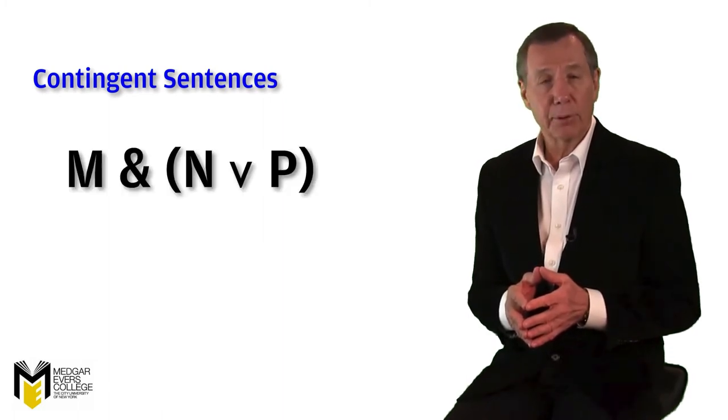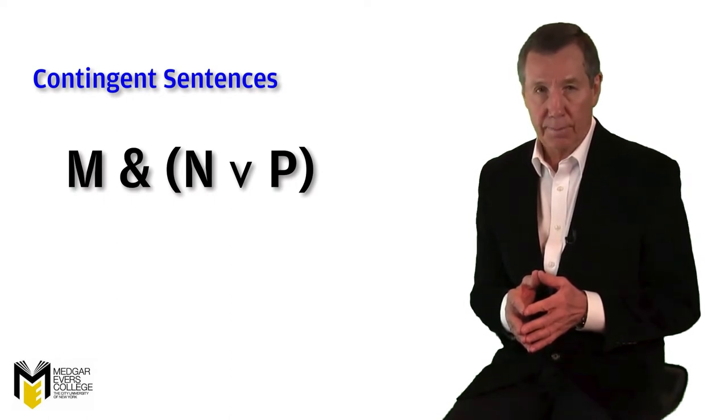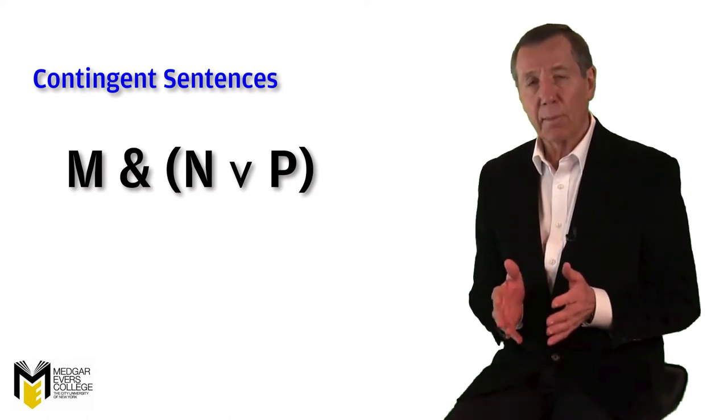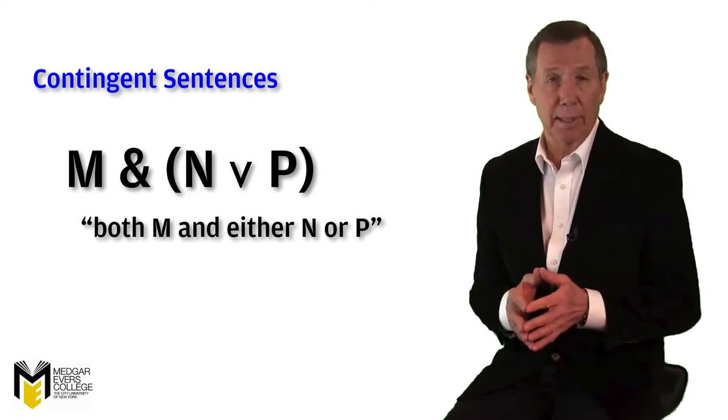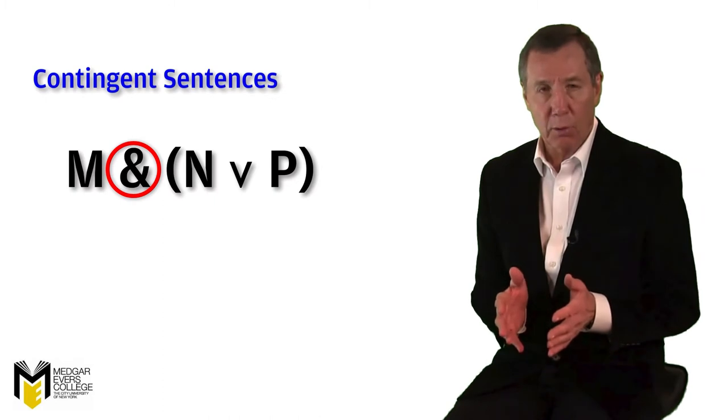M, ampersand, open parenthesis, N, V, P, close parenthesis. We read this as both M and either N or P. The main connective is the ampersand, so the sentence as a whole is a conjunction.